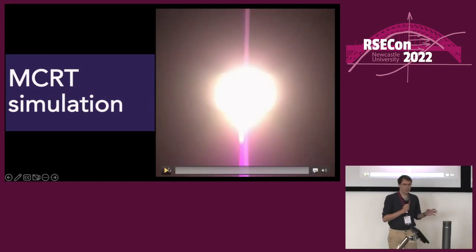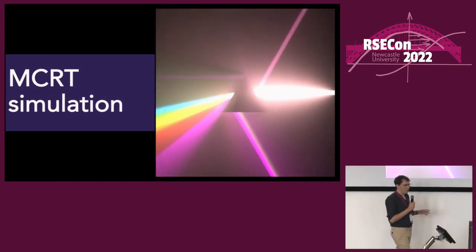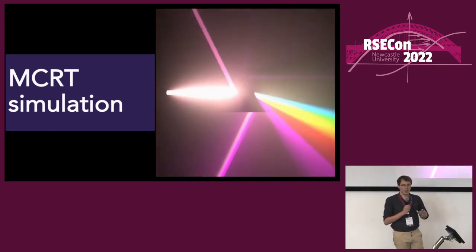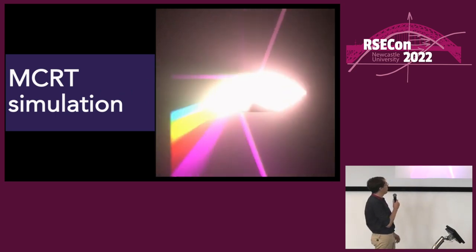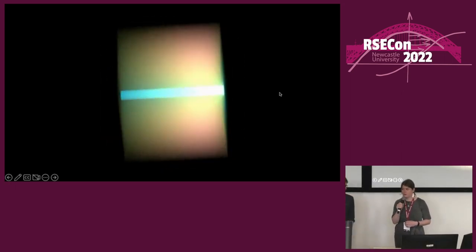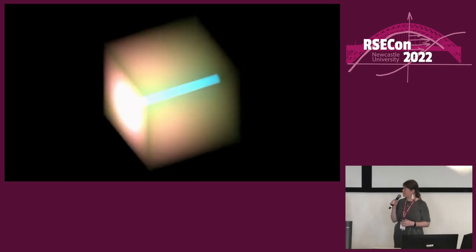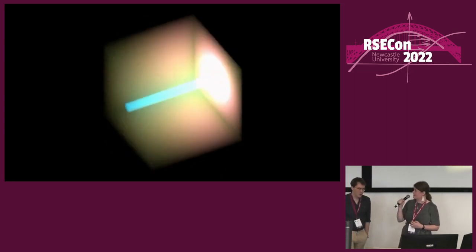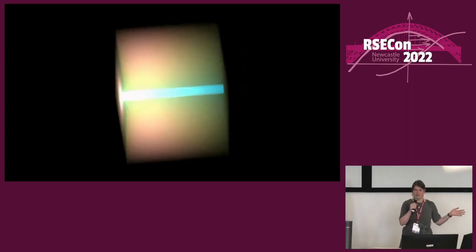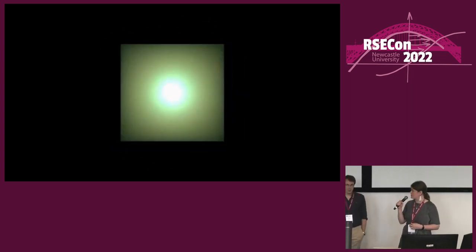A Monte Carlo radiative transfer simulation builds a statistical map of where light ends up by simulating the lives of billions and billions of photons. Here we have white light refracting through a prism in a foggy room. The human body is not shaped like a prism, so we also have an example cube of flesh. You can see an input beam going in, blue light being scattered, and a reddish glow to the other side — showing how the light travels through that material.